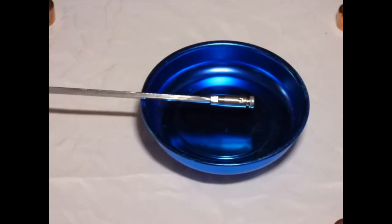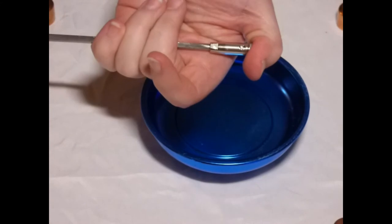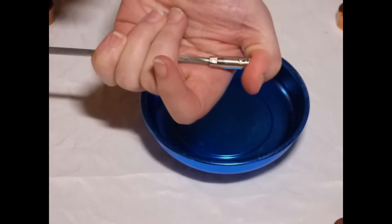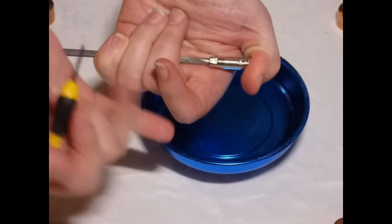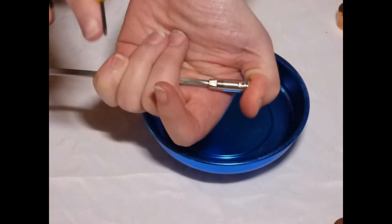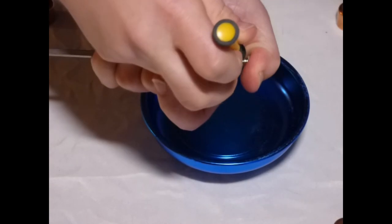Using your non-dominant hand, support the end of the blade and hold the tip down to remove pressure on the screws with your thumb. This also allows you to form a cup with your palm to catch anything that falls if you don't have a magnetic bowl. Then using your dominant hand, take your screwdriver and remove the screws.